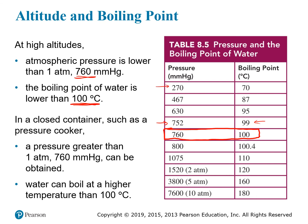Conversely, you can pressurize a closed container to raise the boiling point. At 800 mmHg, the boiling point is above 100°C. If you increase ambient pressure to 10 atmospheres (7600 mmHg), water can be heated to 180 degrees before boiling. This principle is used in pressure cookers and laboratory equipment. An autoclave pressurizes and superheats water to clean laboratory equipment with this superheated pressurized water.